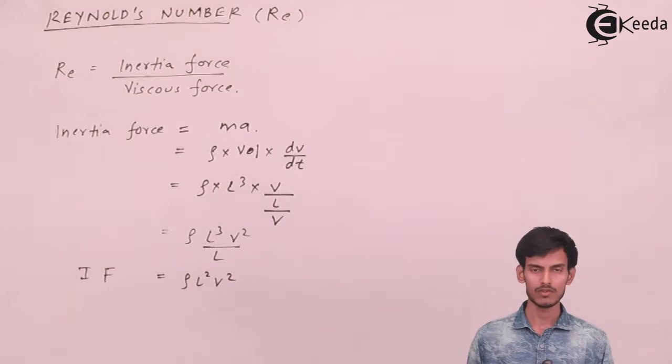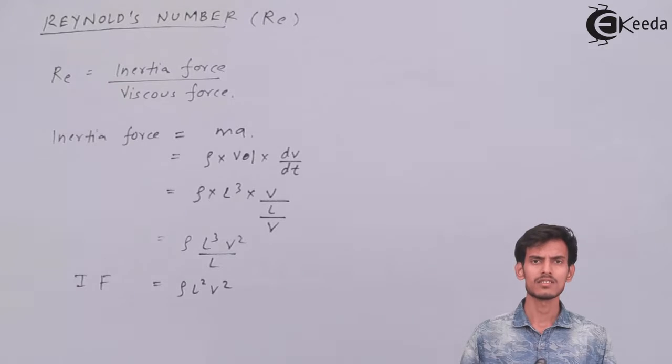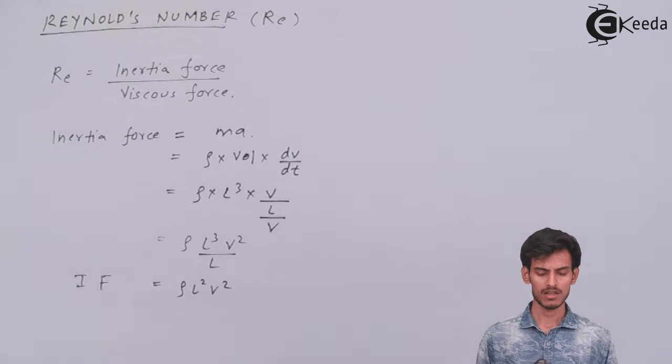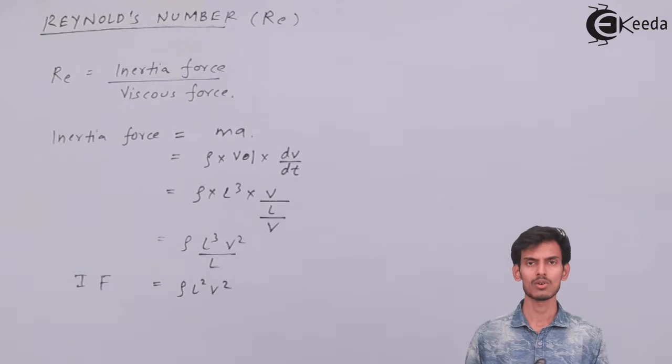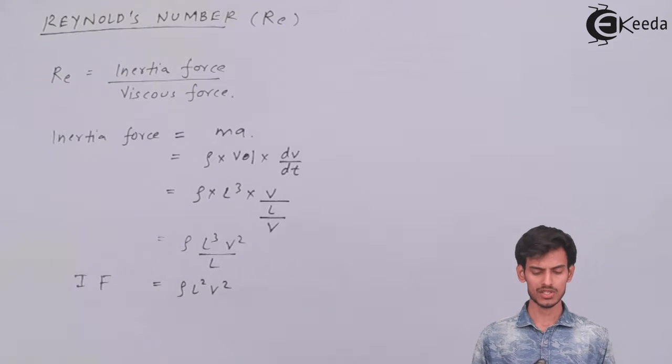Now let's see viscous force. Reynolds number is the ratio of inertia force and viscous force. Inertia force we've written as ma, we came up with ρv²L². Now let's try the same thing for viscous force.